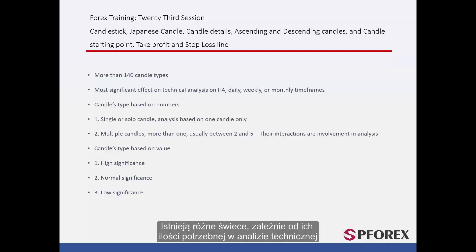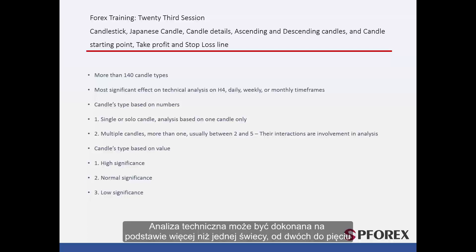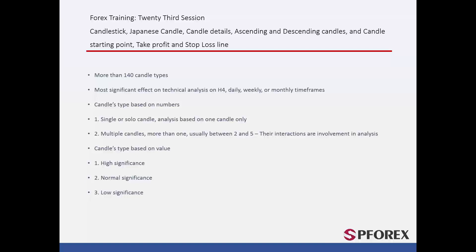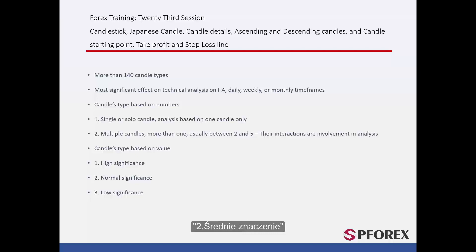There are different Candlesticks based on their number used in technical analysis. Technical analysis can be based on one Candlestick, or on more than one candle — two to five candles. The interaction between candles has a significant effect on technical analysis. Candles can also be classified based on their importance: one is high importance, two is moderate importance, and three is low importance. The most applicable candles have high importance on technical analysis.